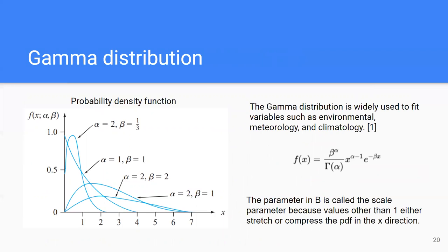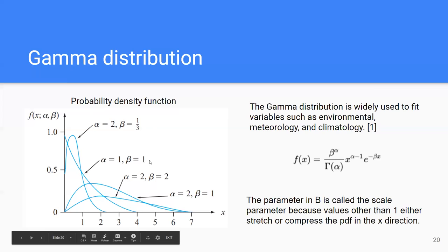For this presentation, we take the BOD variable to find the prior, the likelihood, and obtain the posterior. The gamma distribution function is presented in terms of parameters beta and alpha, and is widely used to fit variables in environmental, meteorological, and climatological contexts. The parameter beta is called the scale parameter because values other than one either stretch or compress the probability density function in the x direction.